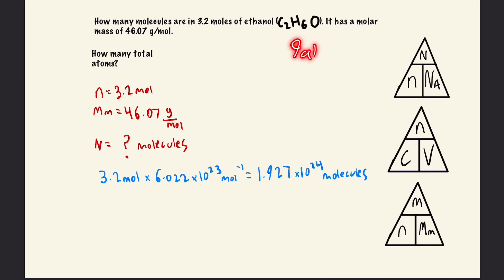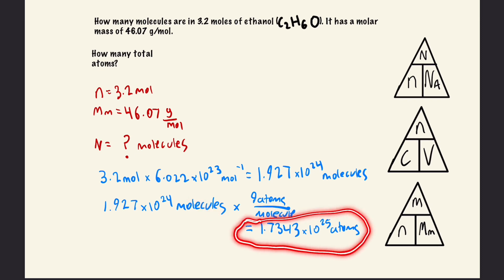That gives us a total of nine atoms per molecule. So we multiply the number of molecules by nine atoms per molecule. These molecules cancel out, and we're left with 1.7343×10²⁵ atoms.